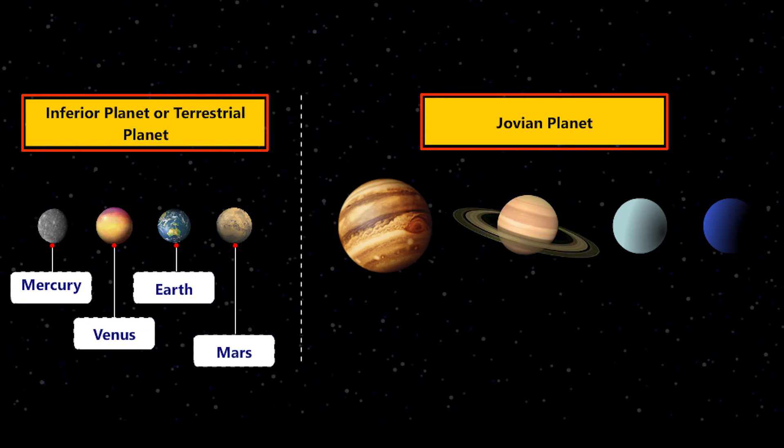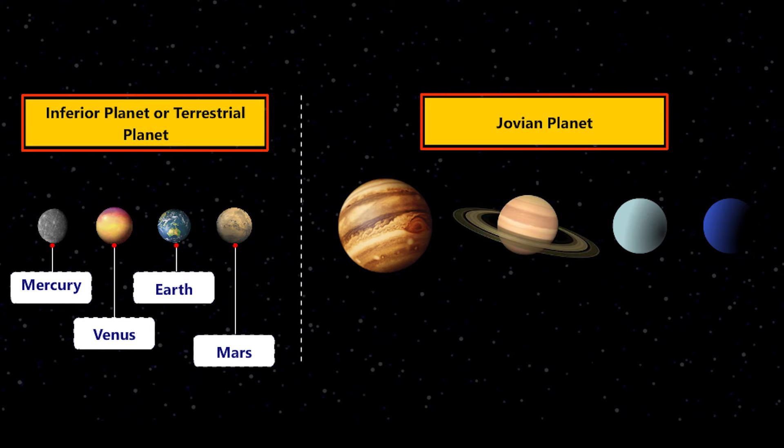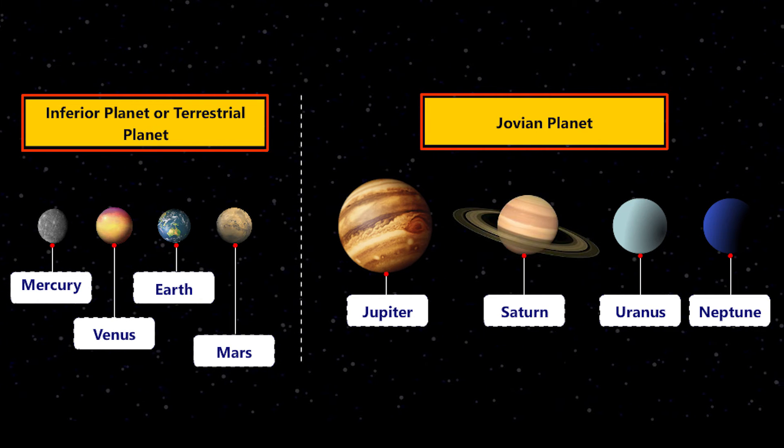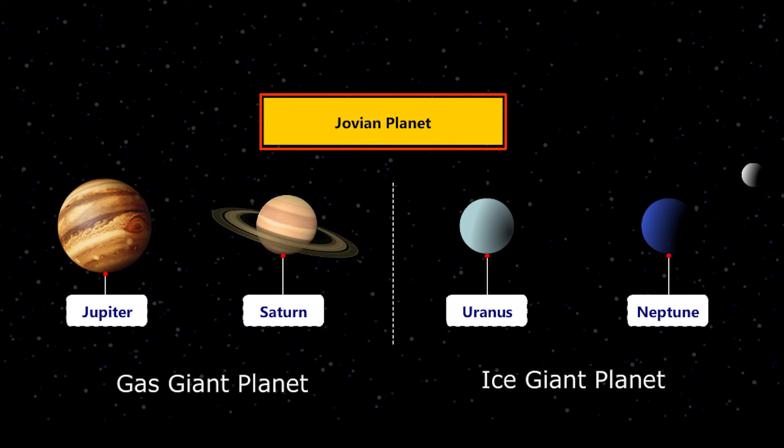Mercury and Venus are the only two planets in our solar system that don't have moons. Jupiter, Saturn, Uranus, and Neptune are Jovian planets and they are separated into two parts: gas giant planet and ice giant planet.